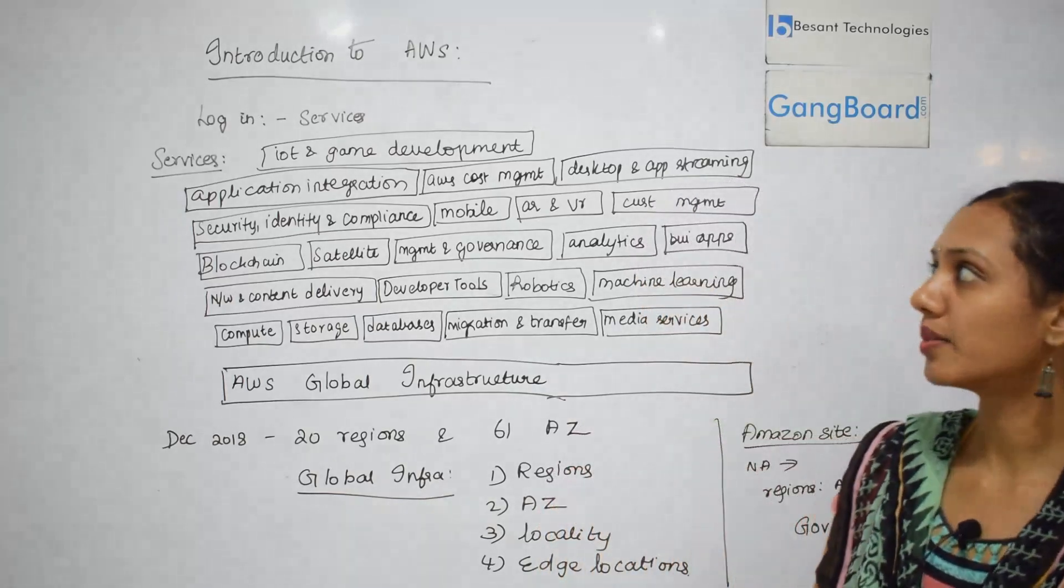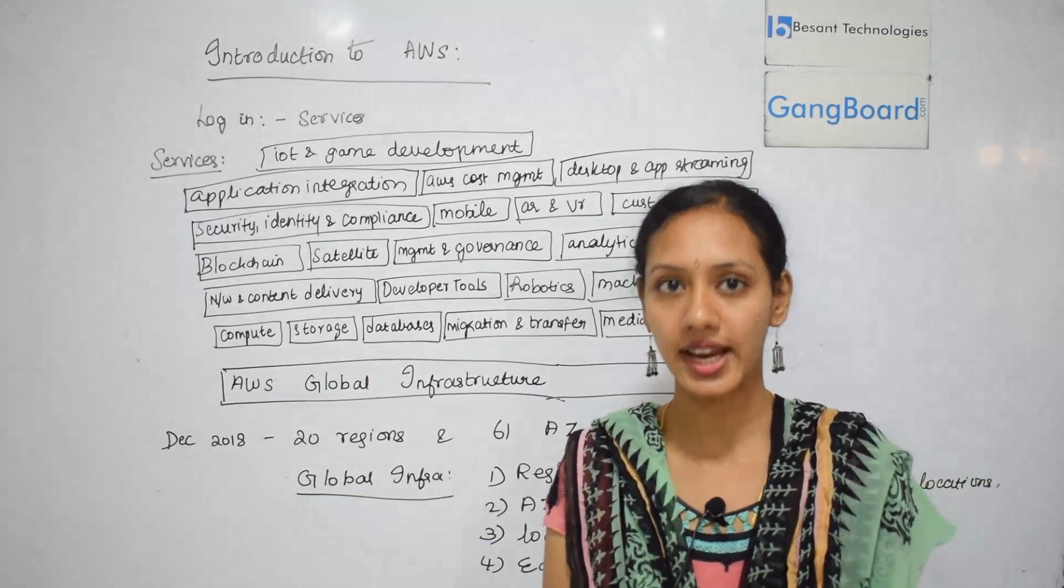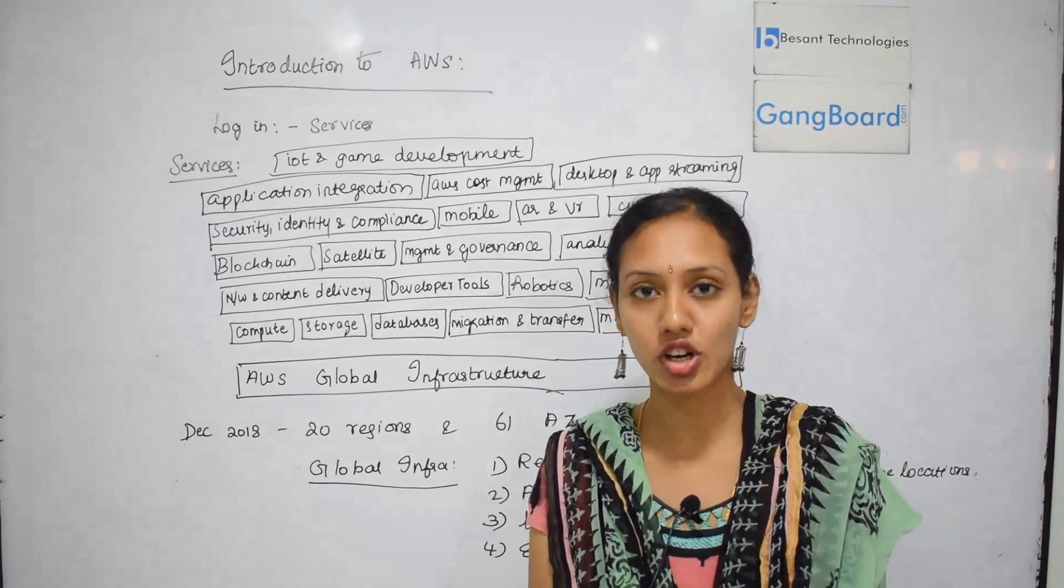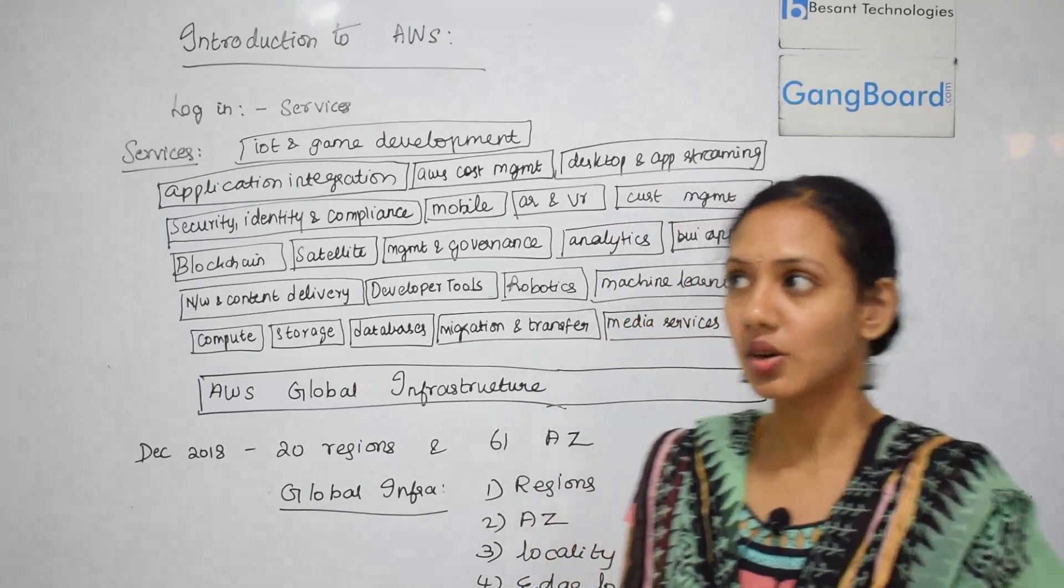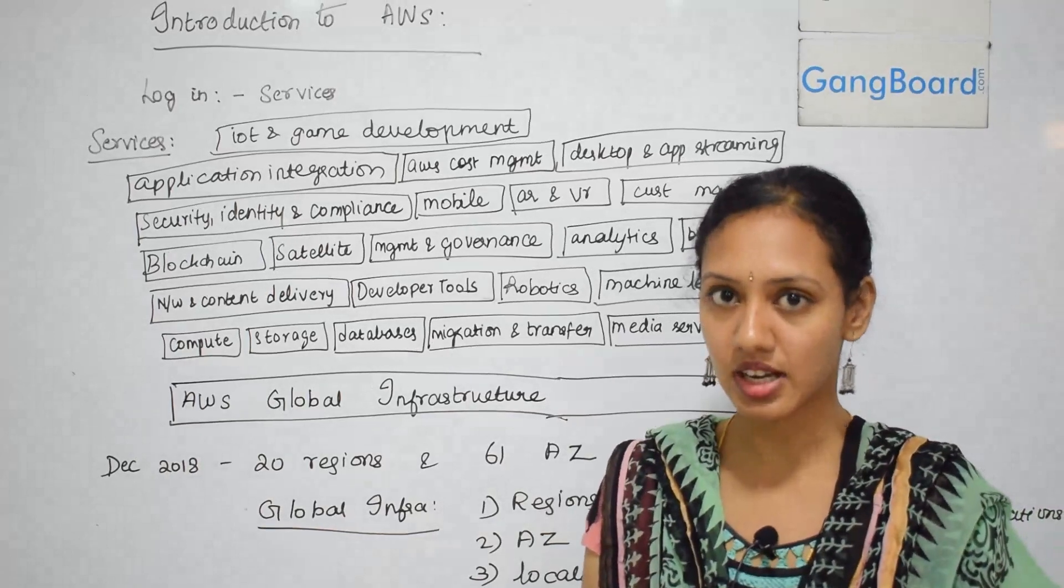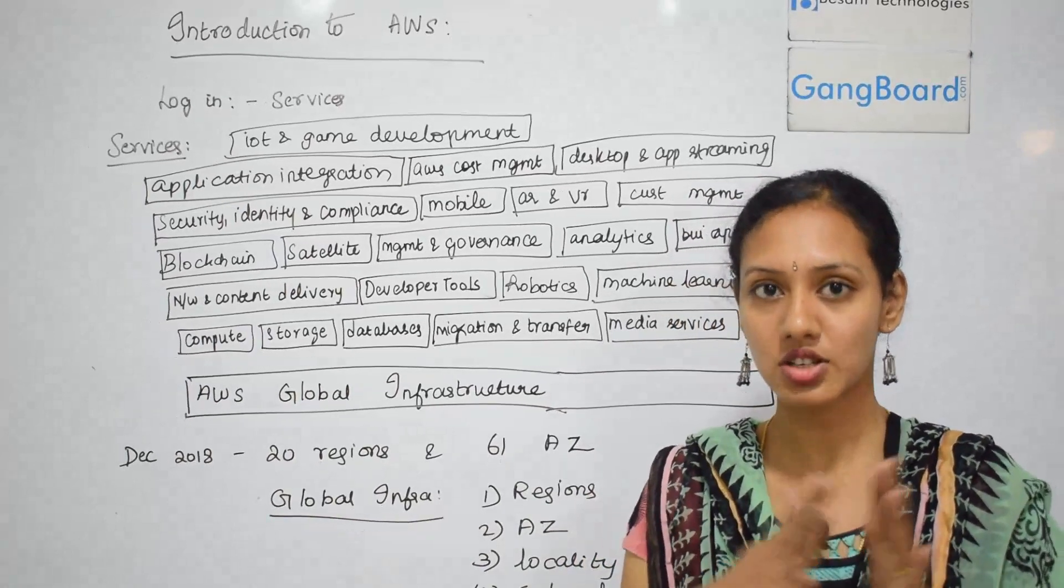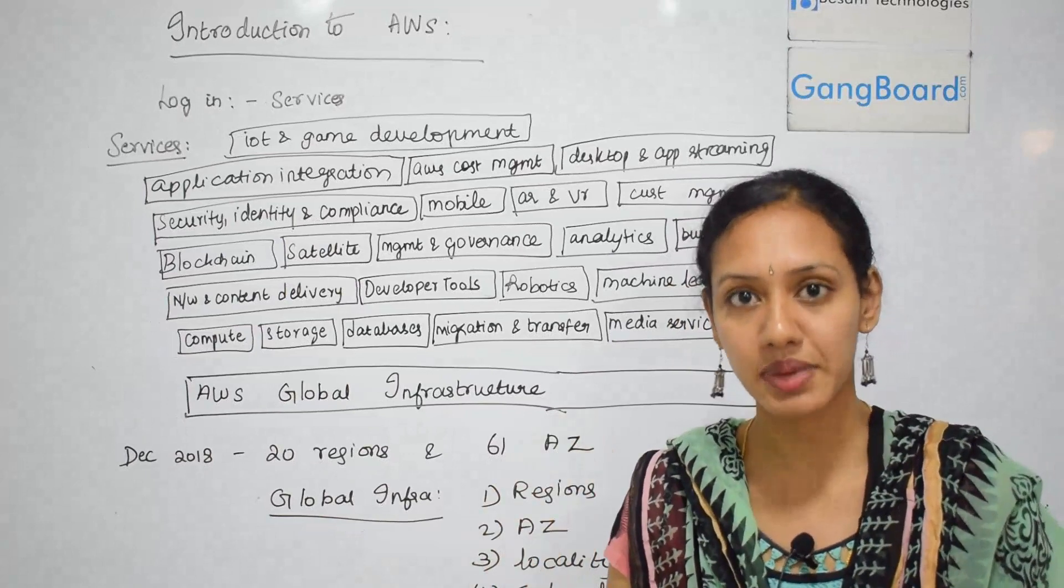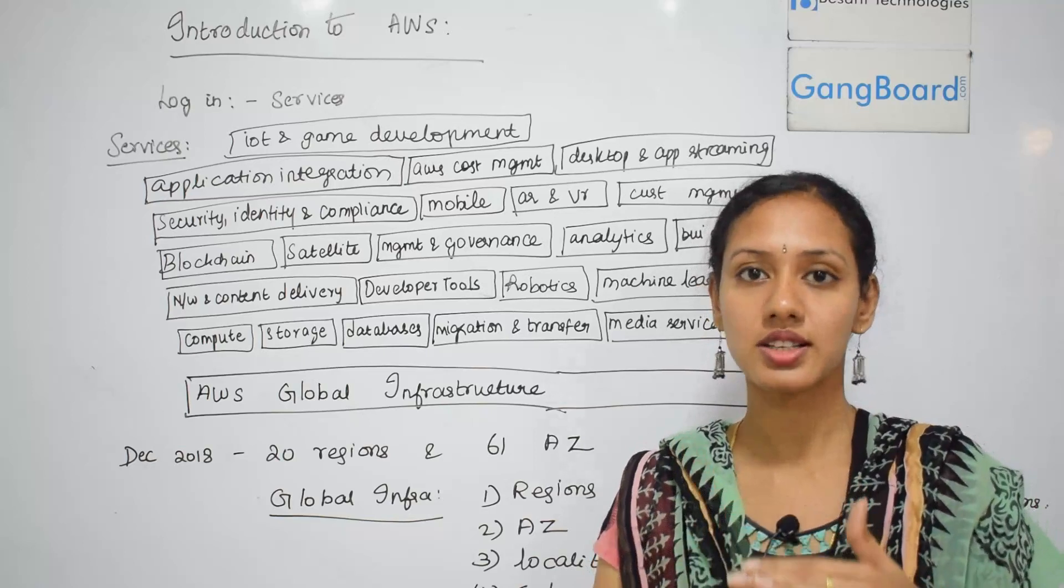In this video, we are going to talk about a brief introduction to AWS, and mainly we are going to talk about the AWS global infrastructure. Once you log into the AWS console, the first page is going to be filled with services. We have all the list of services listed on the main page.